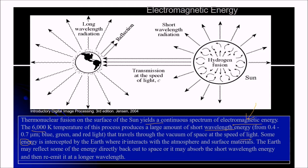Some of the energy is intercepted by the earth where it interacts with the atmosphere and the materials of the surface. And the earth may reflect some of the energy directly back to space. It may also absorb the short wavelength energy and re-emit in the longer wavelengths.